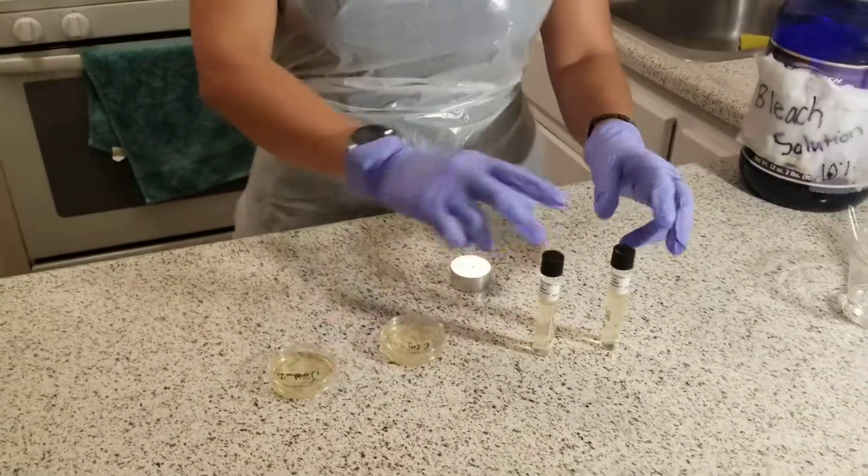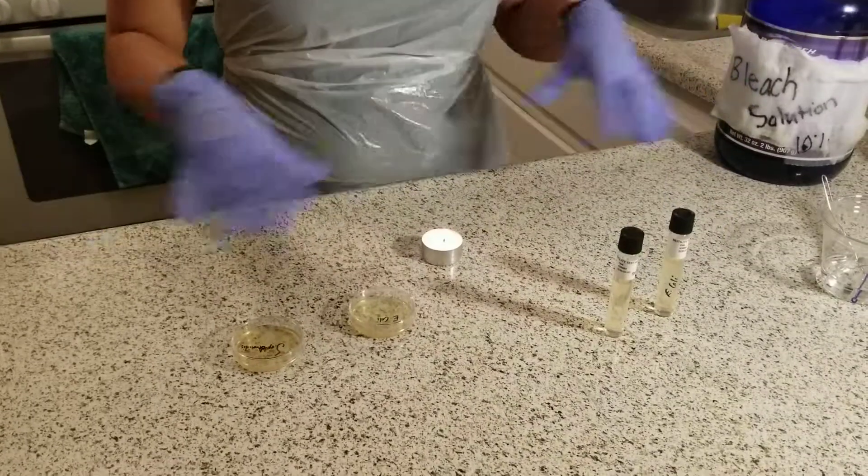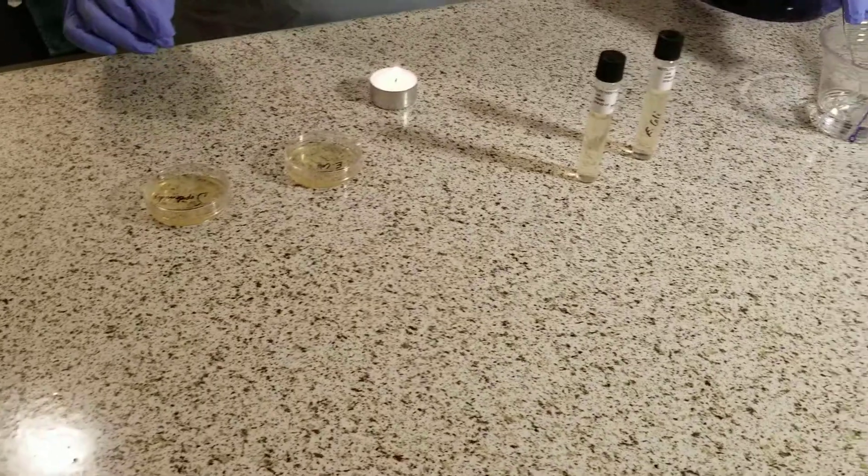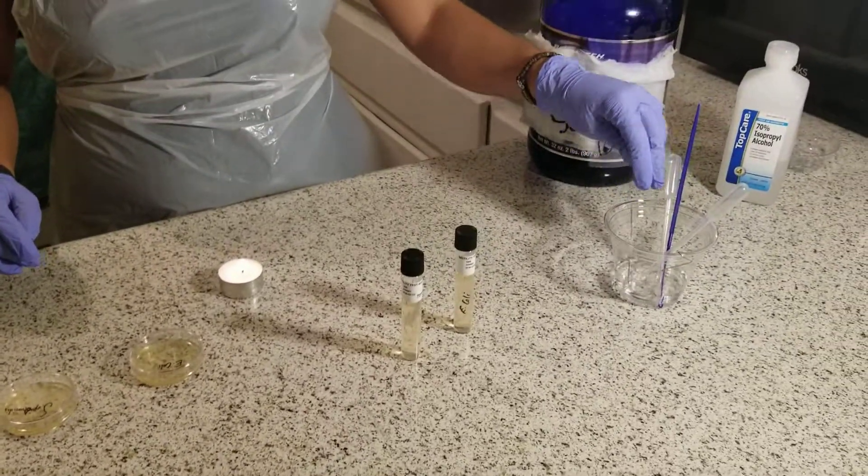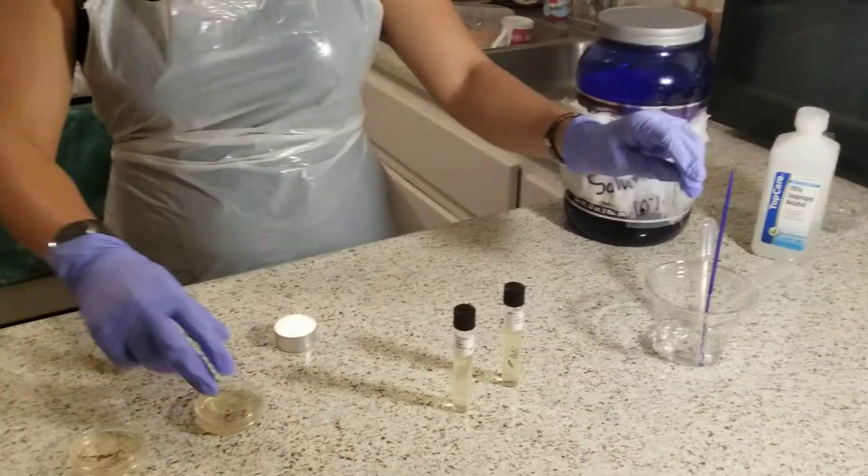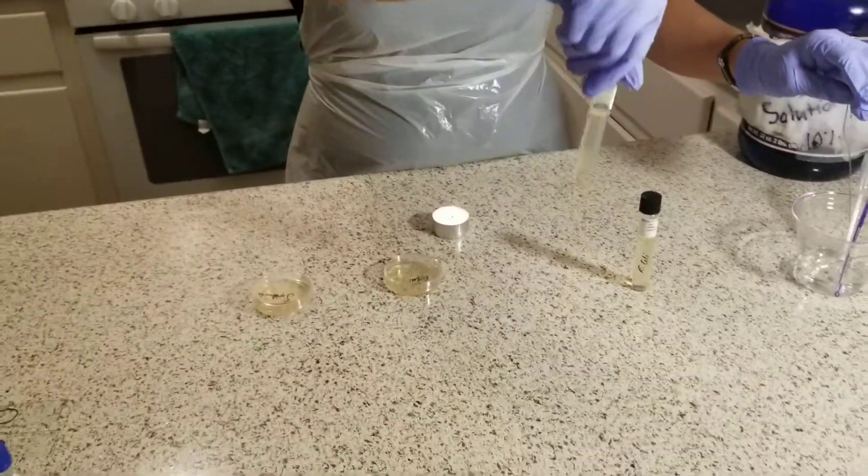First, I disinfected my workspace with a 10% bleach solution. I have two paper clips here that will be sterilized in alcohol, and I'll demonstrate the motility test with E. coli.